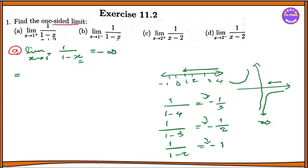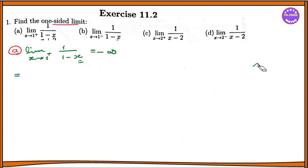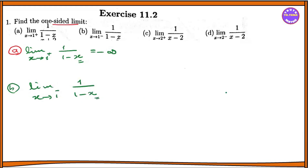Now this is part B. B is the left-hand limit, 1 minus. The limit as x tends to 1 minus of 1 by 1 minus x. So x approaches from the left, meaning x minus 1 is negative. We get values 0, minus 1, minus 2, minus 3, minus 4, and so on.